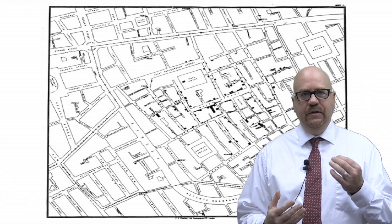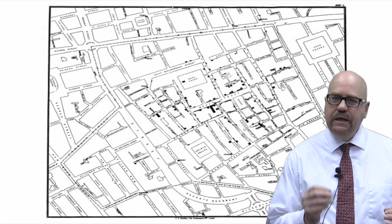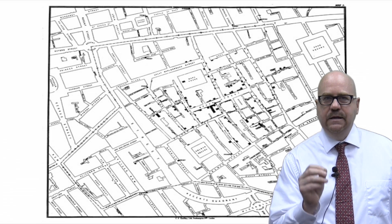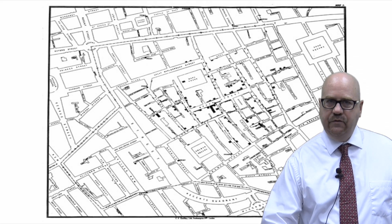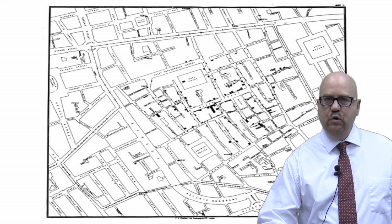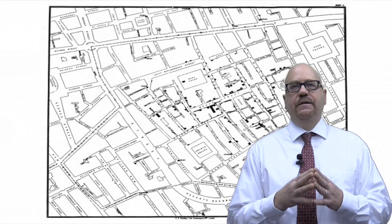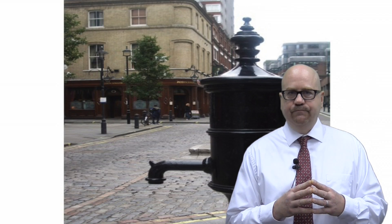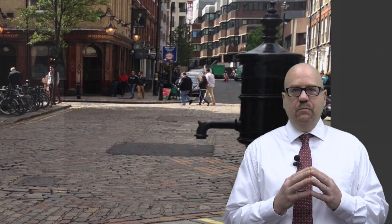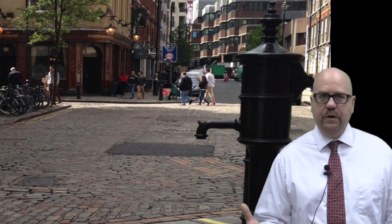Through his epidemiological skills, he saved a lot of people. He was able to systematically make observations and discover patterns of how the disease moved throughout Soho, London, which helped him identify the famous Broad Street pump. He removed the handle from the pump, thus ending the cholera outbreak in Soho at that time.